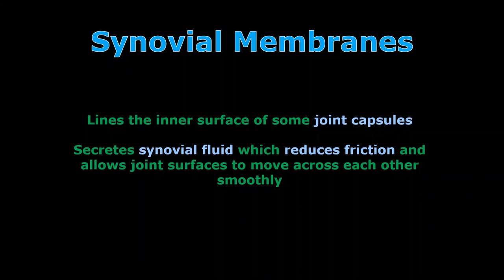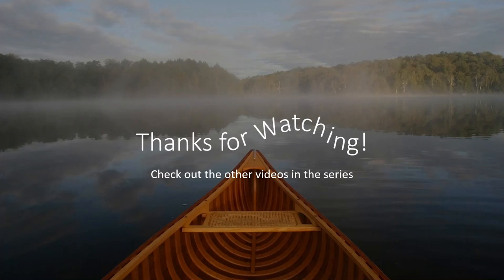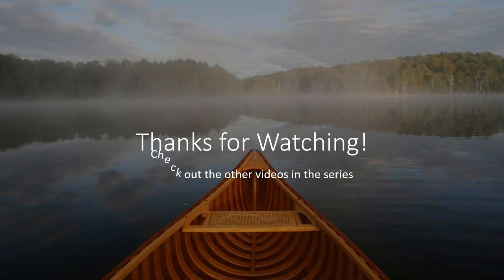Synovial membranes are the one often left out of texts. Think of joint tissue when you see 'synovial,' especially movable joints like the knee and shoulders. There's a synovial fluid secreted from the membranes which reduces friction and allows these joints to slide across each other smoothly, so there's no catching or grabbing that would tear or twist the tissue. That wraps up this little shorty — check out more videos in the series, we're going to do more histology in the next one.